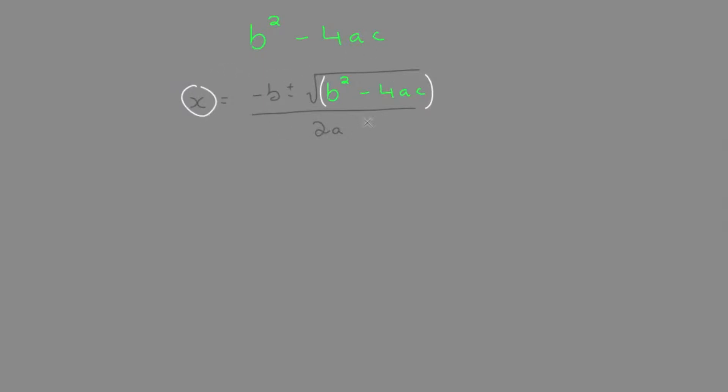So we could save ourselves the extra time of calculating everything else. Just go straight to the discriminant, plugging the values b, a, and c into this.